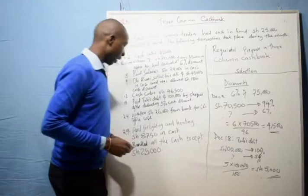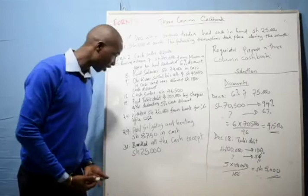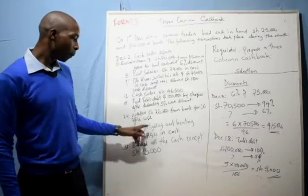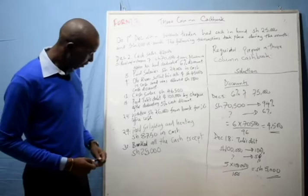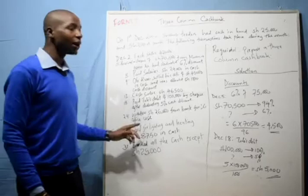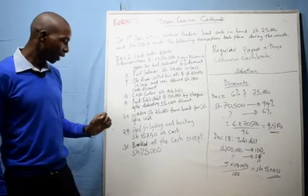Because the money was taken from the bank and moved to cash, where it was used for the office. Then on 29th, paid for lighting and heating 8,750 in cash. Then we banked all the cash except 25,000. I want us to mark this one properly — banked all the cash except 25,000. So we are required to prepare a 3-column cash book.